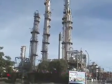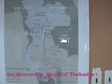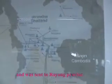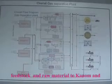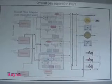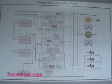Natural gas was discovered in the Gulf of Thailand in 1981 and was sent to Rayong province as feedstock and raw material to the Canon and Rayong gas separation plant to isolate volume composition.